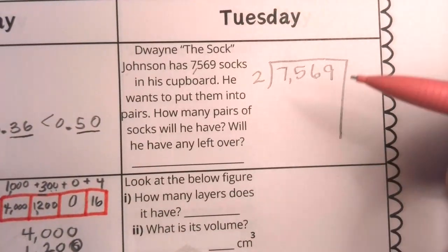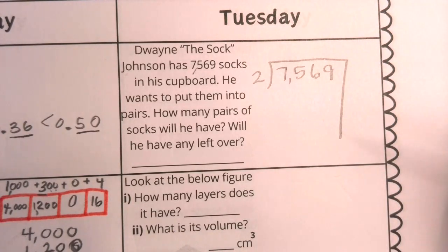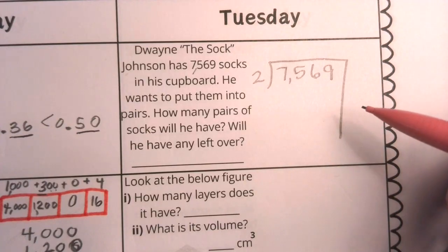So here we're really saying if we have 7,569 socks and we put them in groups of two, how many groups of two can we get? This is a division problem.